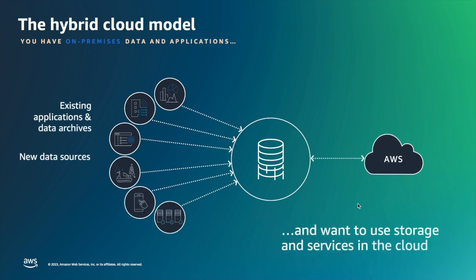AWS Storage Gateway is a service that enables the hybrid cloud model. Existing applications and data archives that live on-prem within your environment can connect to a gateway — in this case Amazon S3 file gateway — over SMB or NFS standard storage protocols, and then data is going to reside within AWS in Amazon S3 as native S3 objects.